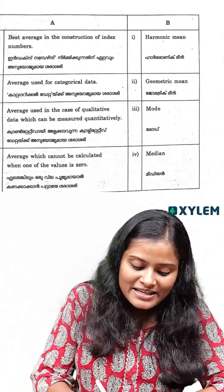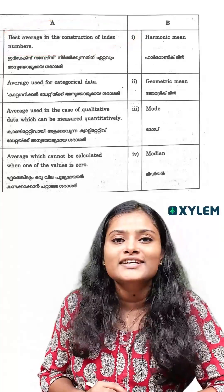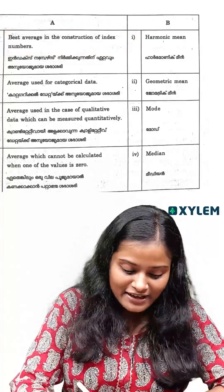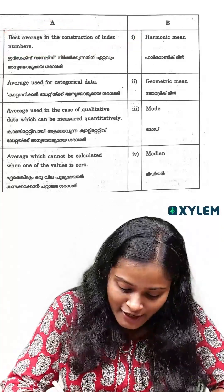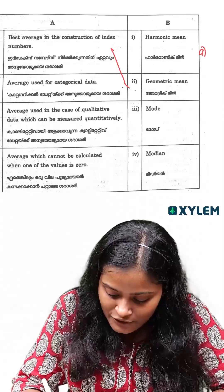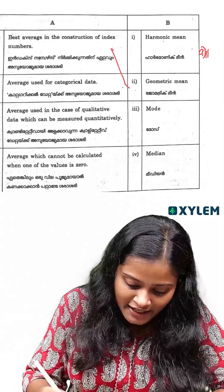Best average in the construction of index numbers. In the construction of index numbers, what is the best average? That is geometric mean. So the first answer is geometric mean.